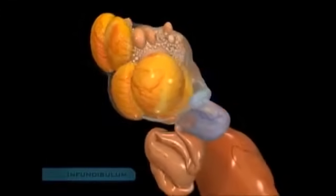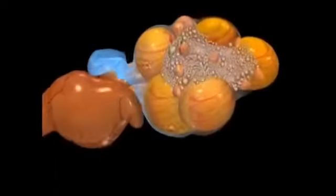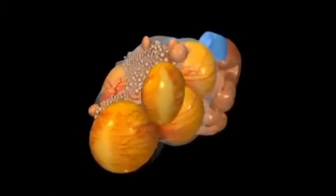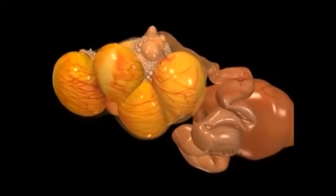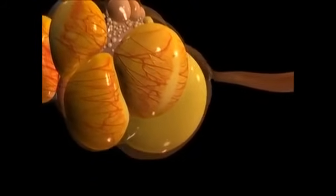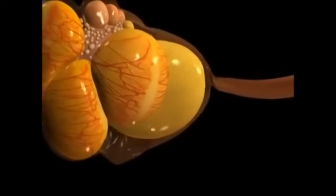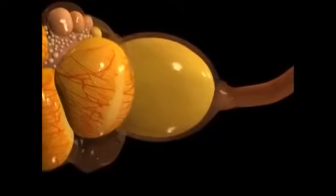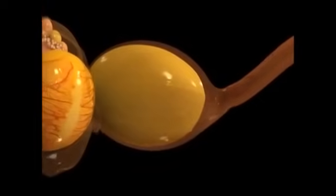Called the infundibulum, the funnel-shaped upper end of the oviduct envelops the ovary and catches the most mature follicle as it reaches maturation and ovulates. Then the yolk embarks on a 24-hour journey down the oviduct.